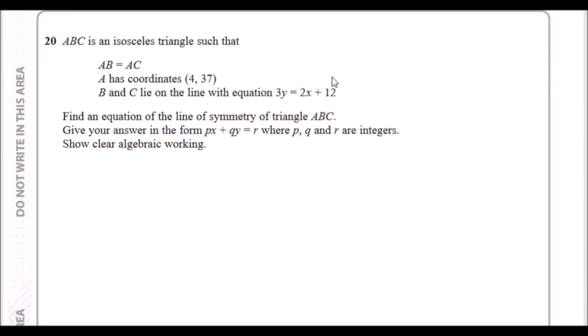ABC is an isosceles triangle. Quick recap: isosceles simply means two lengths are the same, so AB equals AC. If we call this one A and this one B, we have two identical lengths.